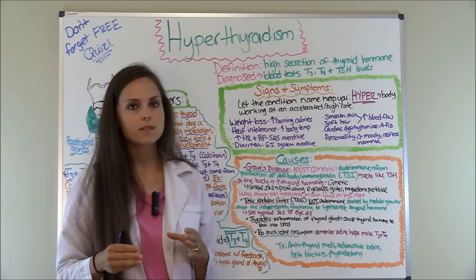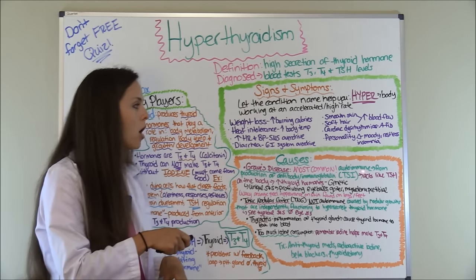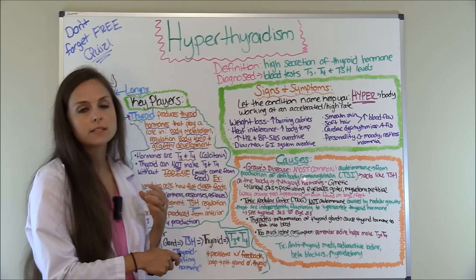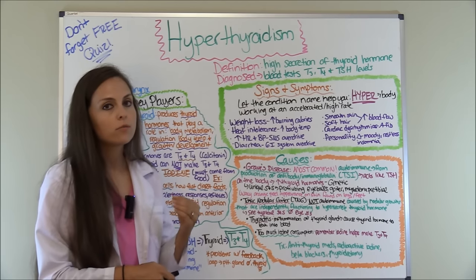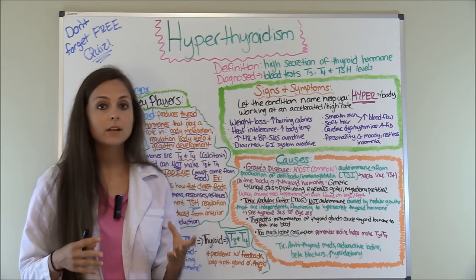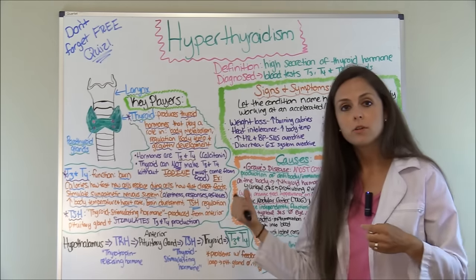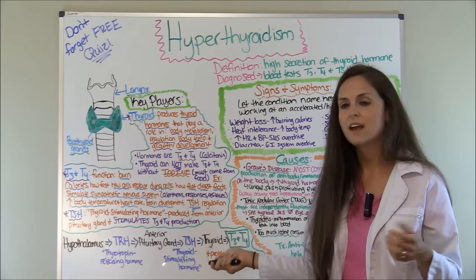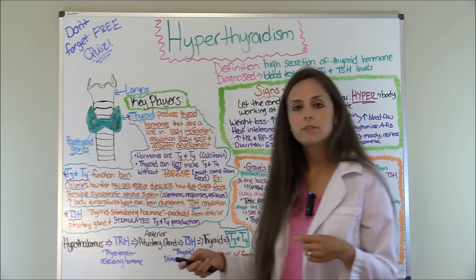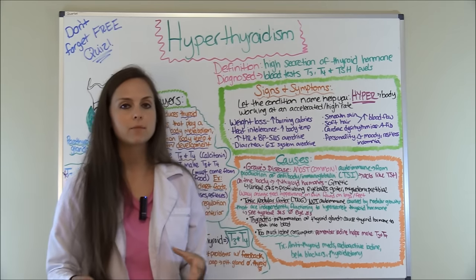What causes hyperthyroidism? The most common cause is Graves' disease. This is an autoimmune condition where the body is causing it on itself. What's happening is the body is producing an antibody called TSI — thyroid-stimulating immunoglobulin — which acts like TSH. Because of this autoimmune response causing it to secrete TSI, the body looks at it as TSH, causing the thyroid to release excessive amounts of T3 and T4. This tends to be genetic and runs in families.